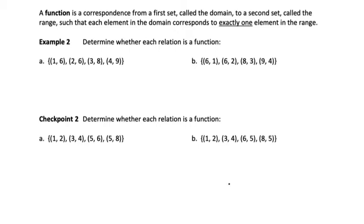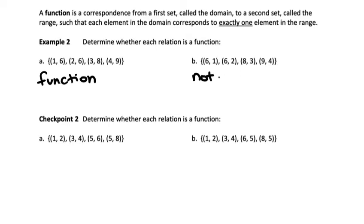In example two, we're asked to determine whether each relation is a function. I'm looking at all of the elements in the domain, or first coordinates, and seeing if any of them go with two different second coordinates. In part A, I have one, two, three, and four — each only has one value for a second coordinate, so example A is a function. For B, I have the points (6,1) and (6,2). Six has two different output values, one and two, so that makes it not a function. If I find one input value with more than one output value, that automatically makes it not a function.